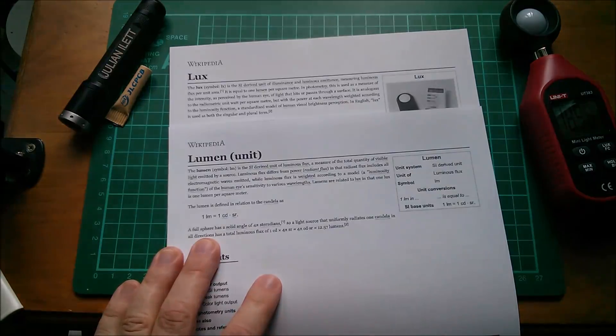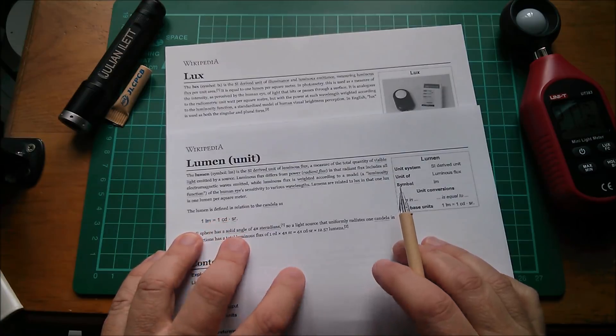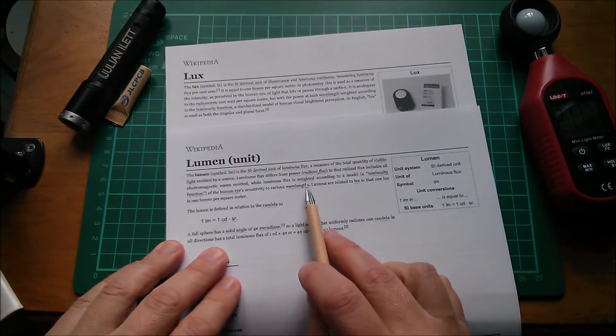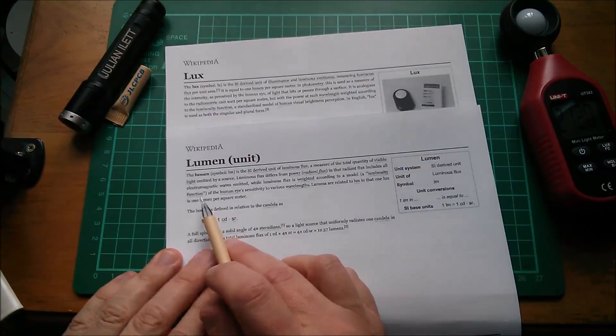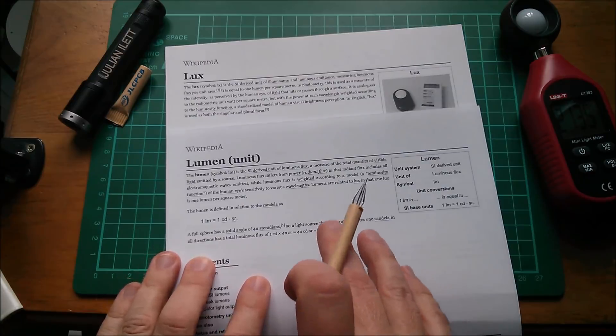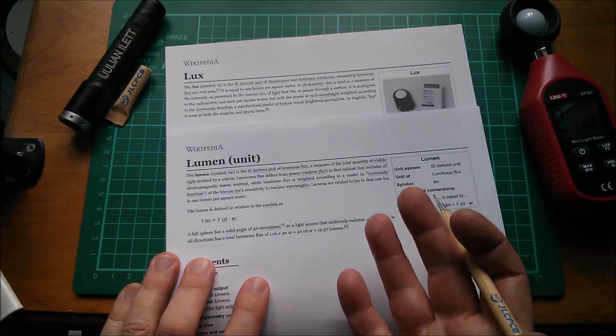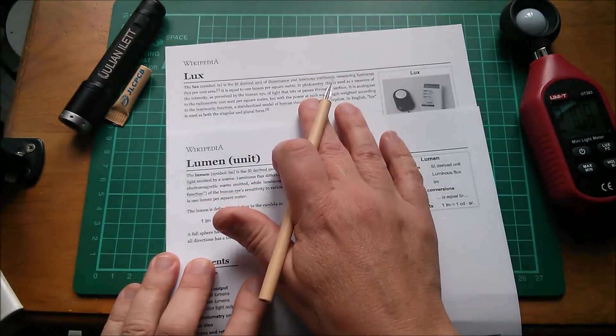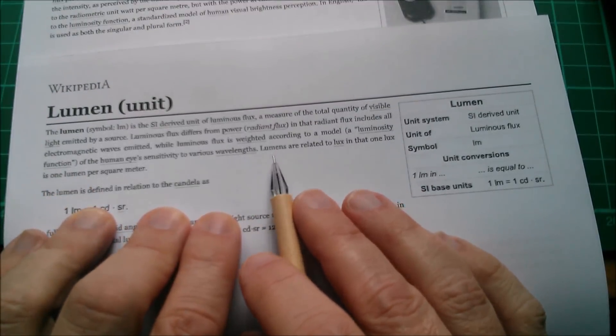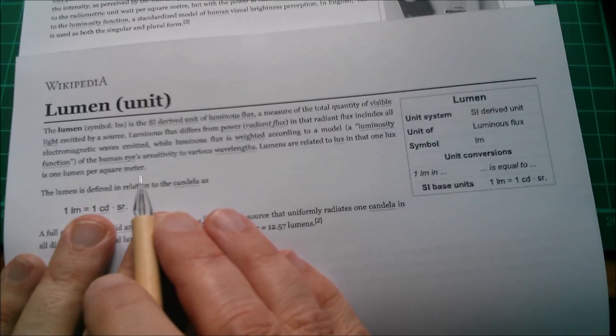Now one thing that both lux and lumens have in common is that they're both weighted according to the luminosity function. This one weighted according to a model, a luminosity function of the human eye's sensitivity to various wavelengths. So if you can't see it, then lumens and lux won't measure it. So for example, infrared and ultraviolet, no lumens, no lux.